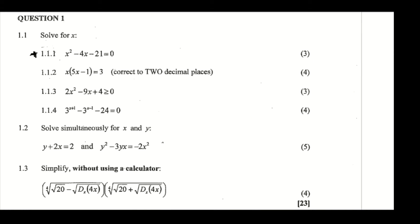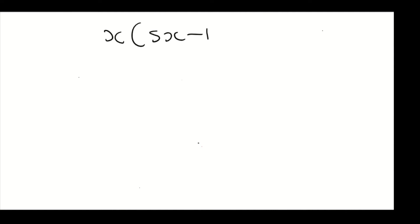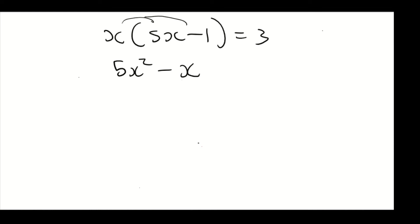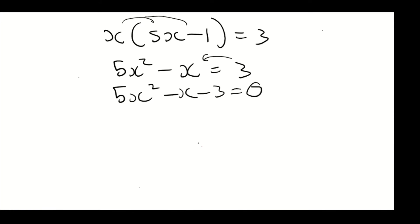Now we're going to do 1.1.2. We have x into 5x minus 1 equals to 3. The first thing we're going to do is multiply the x inside, so we get 5x squared minus x equals to 3. Transposing the 3 to the other side, we have 5x squared minus x minus 3 equals to zero.